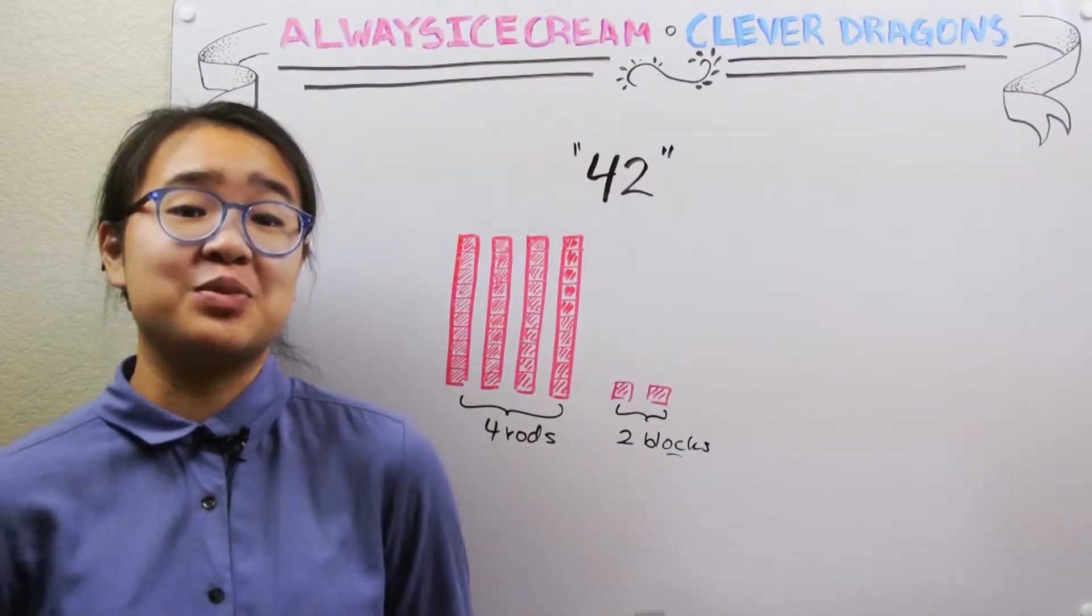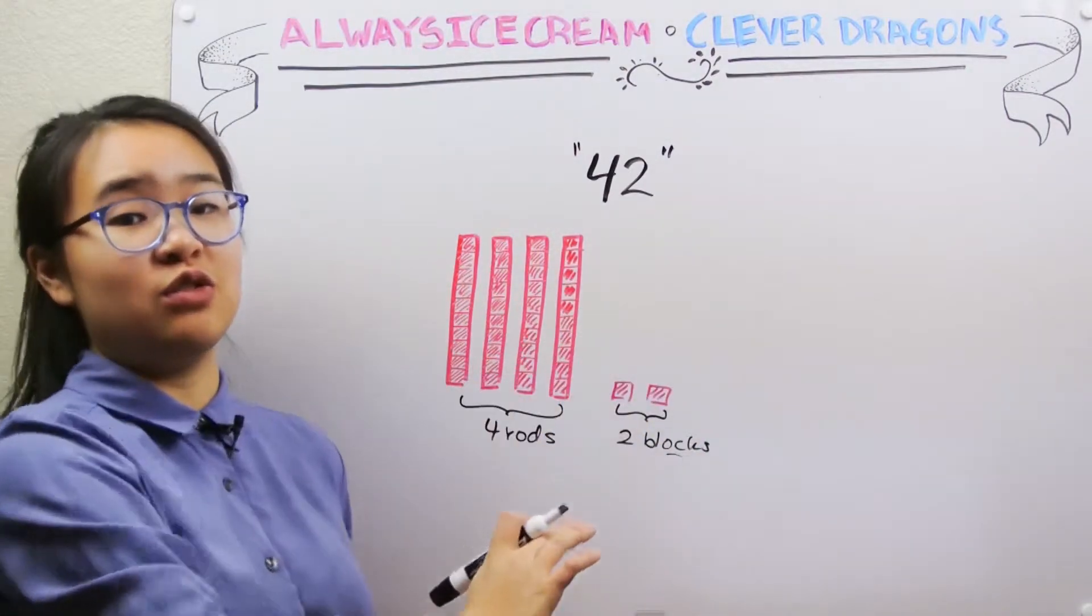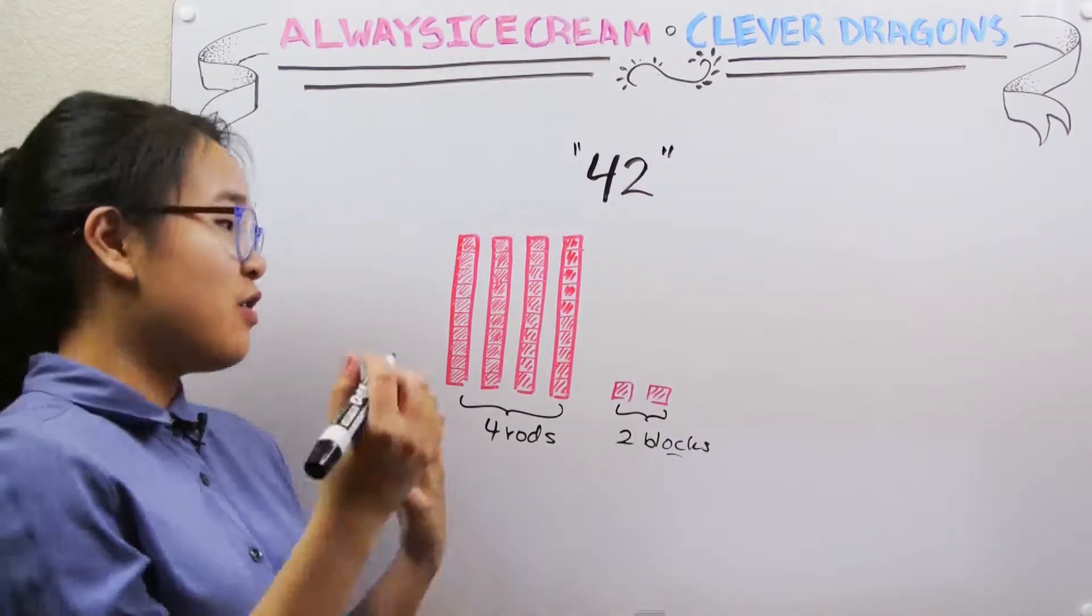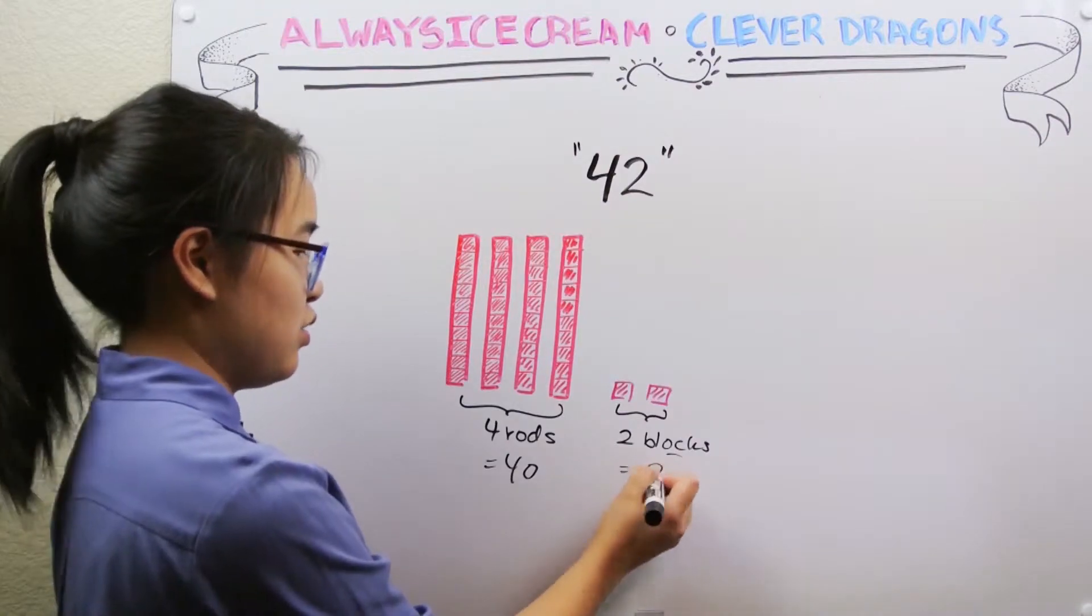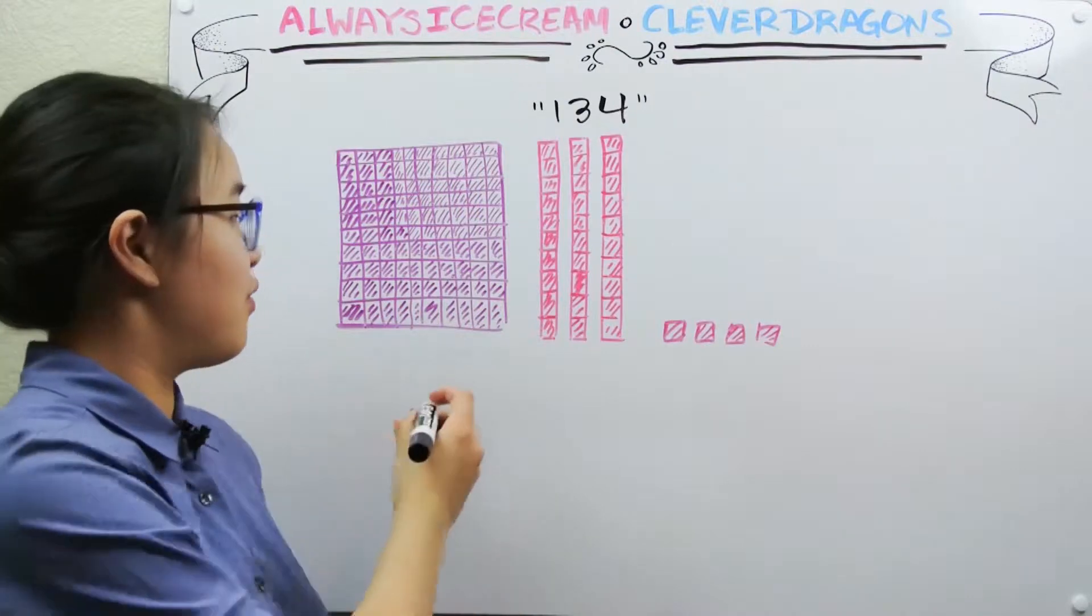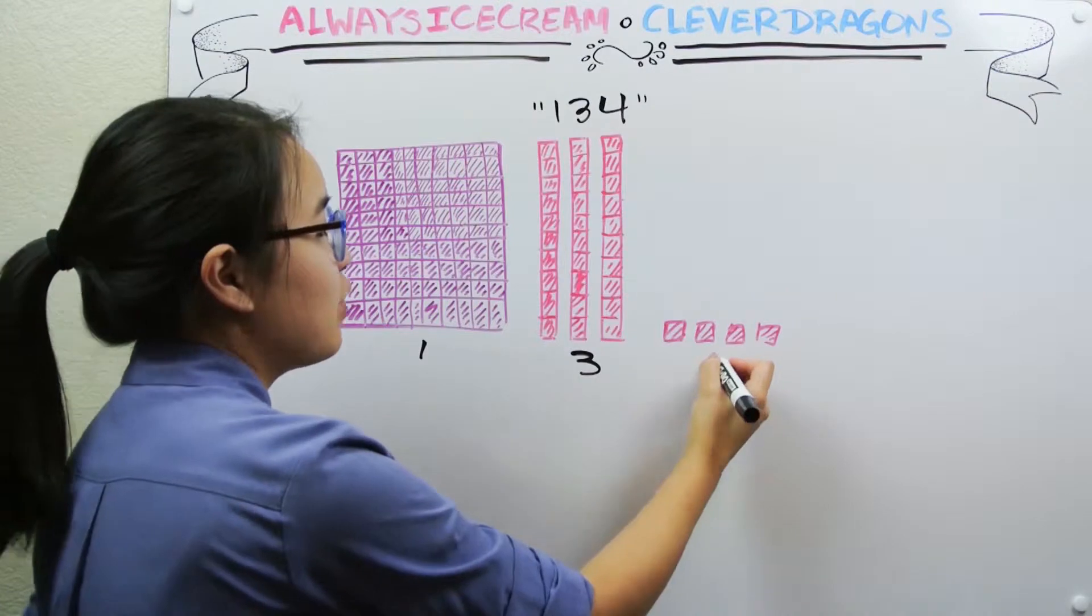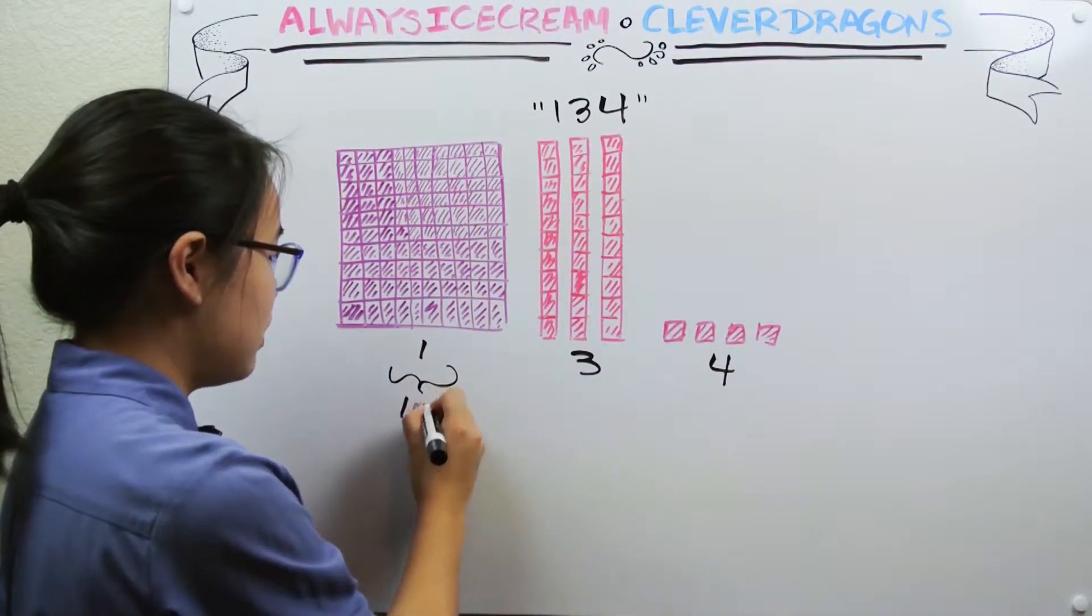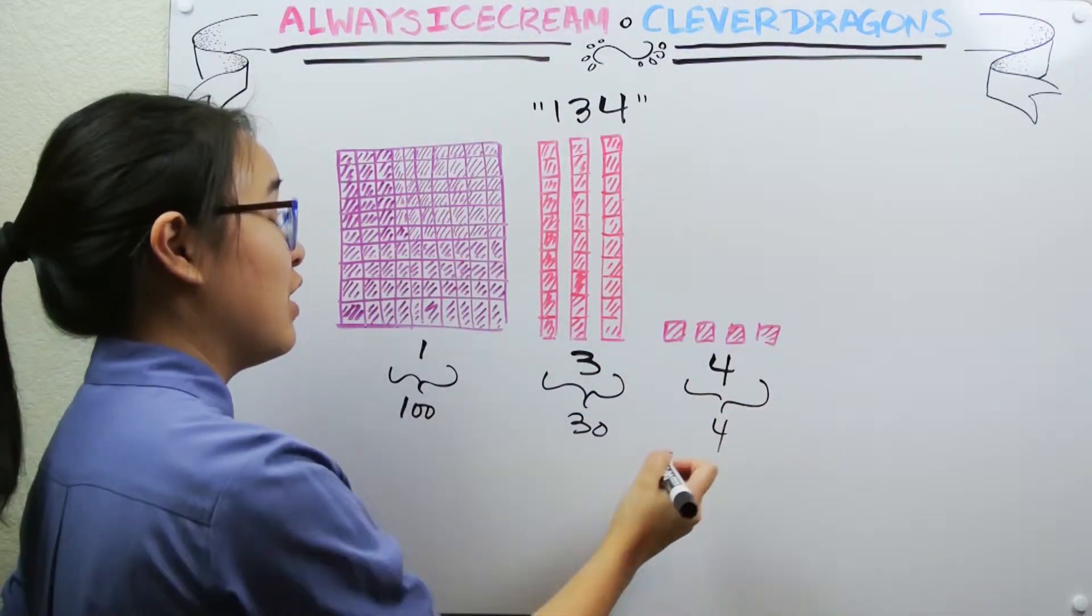In the same fashion, we could say that the number 42 is made up of four rods and two blocks or ones. So this would be four tens and two ones. Four tens are equal to 40, and two ones are just two. Similarly, the number 134 is made up of one flat or hundreds, three rods or tens, and four unit blocks or ones. So we know we have one hundred, thirty, and four. One hundred thirty-four.